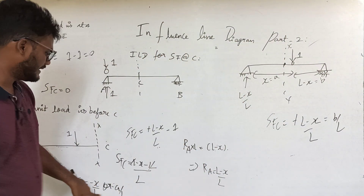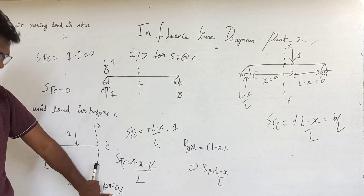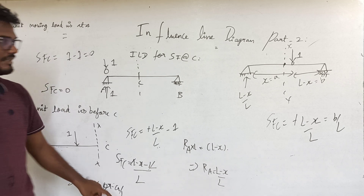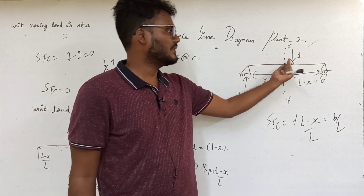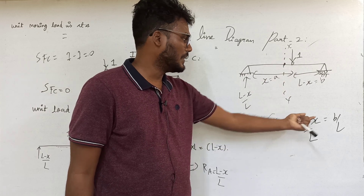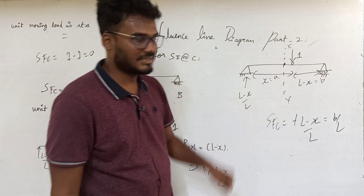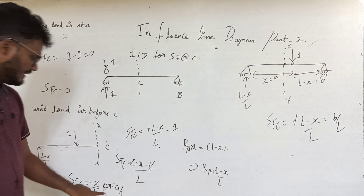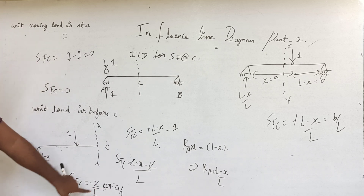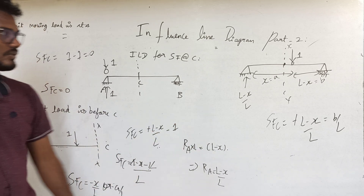When the unit load is just at C, the shear force transitions: from before C it is minus A by L, and just after crossing C it becomes plus B by L. So there is a transition at the same point C — it is minus A by L and B by L.